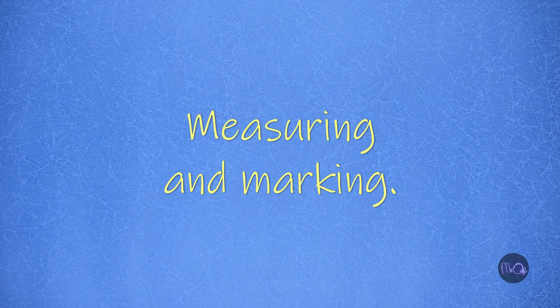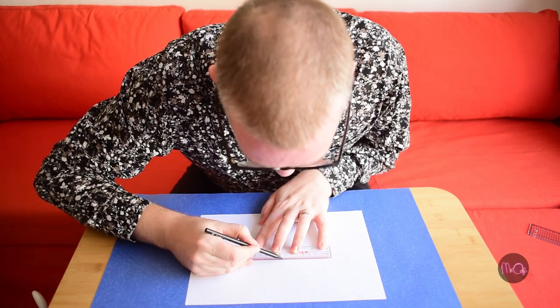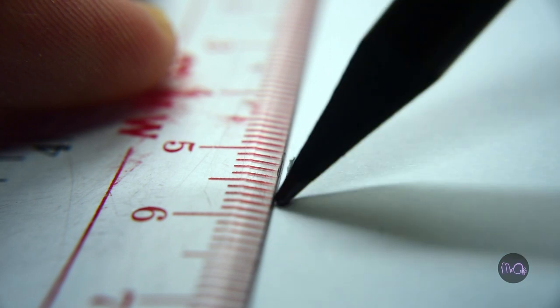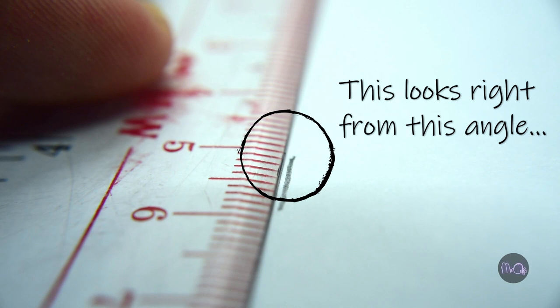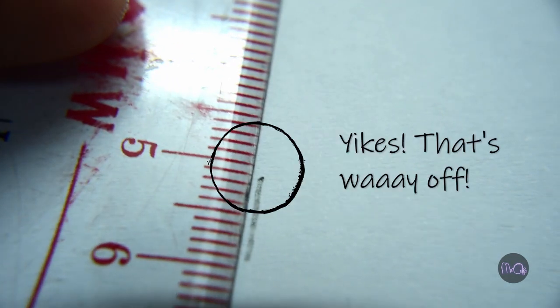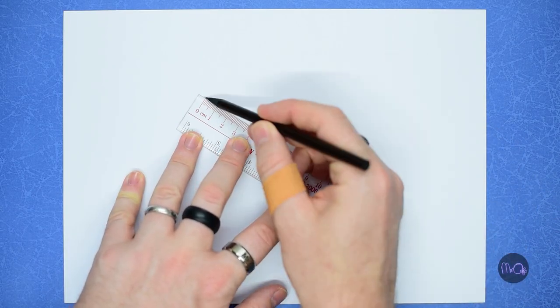Number three: measuring and marking. You need to get your head right over the thing you're measuring. If you have a thick ruler and you're at an angle, you will be wrong. Put a small dot at the place you need and then join the dots up.